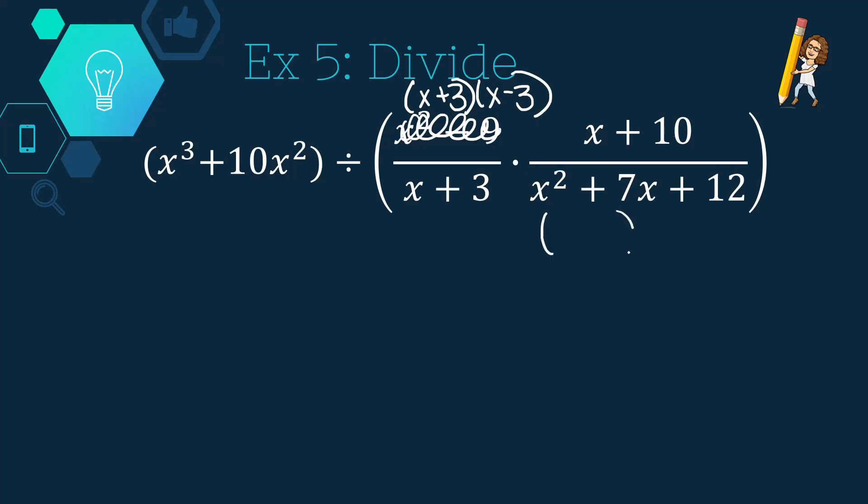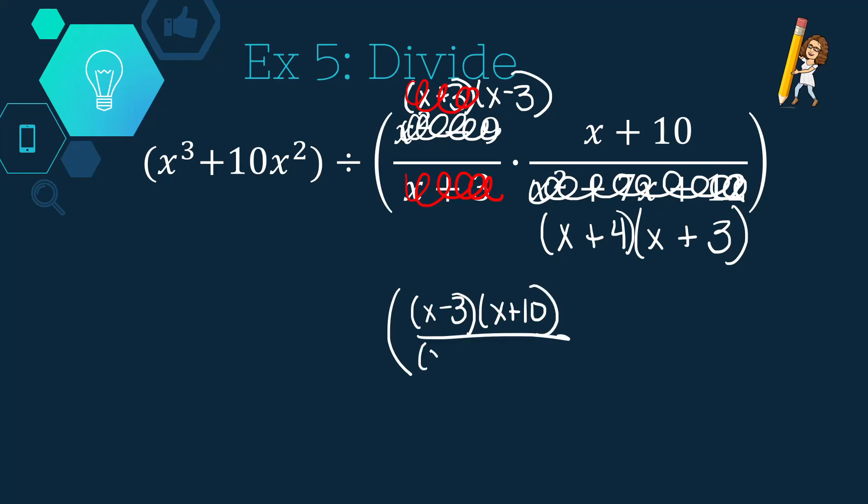x plus 10 doesn't simplify. x squared plus 7x plus 12, I think, does, though. So, x and x, 4 and 3 will give us a 12. Both plus will give me a 7x. So, I'm going to scribble out. Let's simplify what's inside there. So, x plus 3s can simplify out. Oh, nobody else, though. So, that in the parentheses is technically x minus 3, x plus 10. And x plus 4, x plus 3.